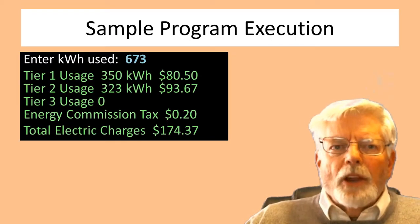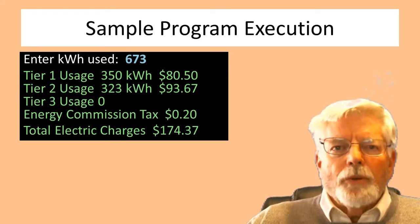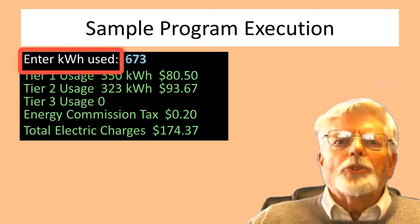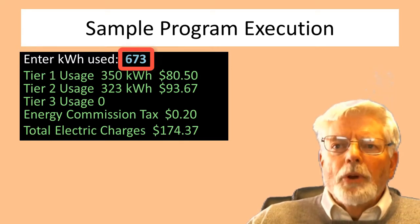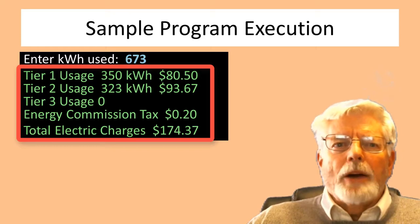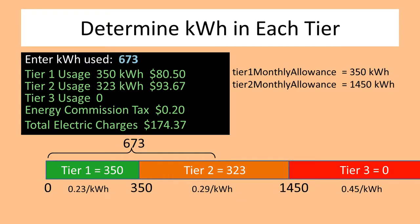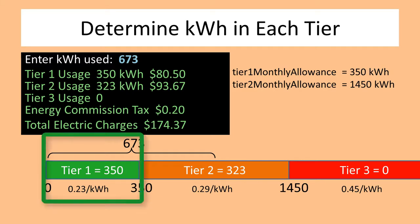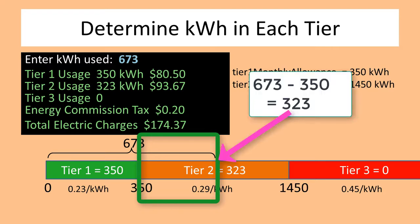If I used 673 kilowatt hours, the bill is $174.37. The colors for text characters in this presentation are for illustrative purposes only — white for prompt messages, light blue for user inputs, and green for program output. To determine how many kilowatt hours are in each tier: since I used 673 kilowatt hours, I ended up in tier 2. I am not billed at $0.29 for all my energy — only the first 350 kilowatt hours are billed at $0.23. The number of kilowatt hours in tier 2 is 673 minus 350, which is 323.